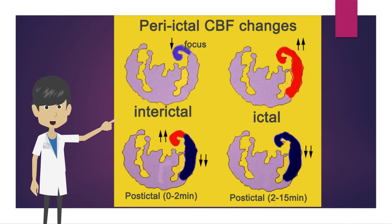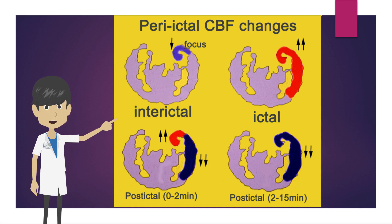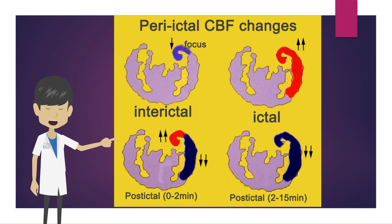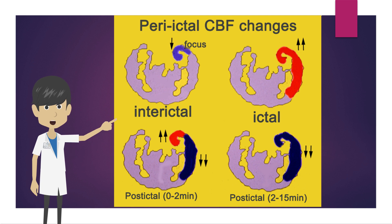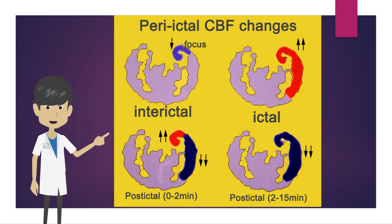Images of brain perfusion before and after seizures in temporal lobe epilepsy are shown. During the interictal phase, there is a decrease in brain perfusion around the epileptic focus. During seizure, blood flow increases in a wide area including the epileptic focus. After the seizure, brain perfusion decreases around the epileptic focus, and then decreases as seen in the focus as well.